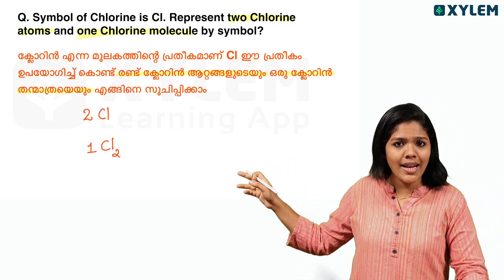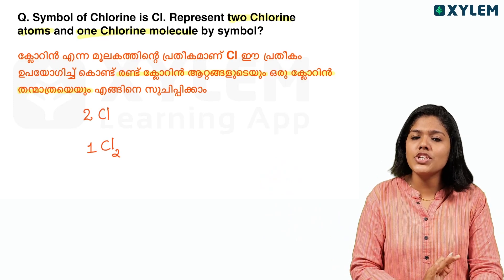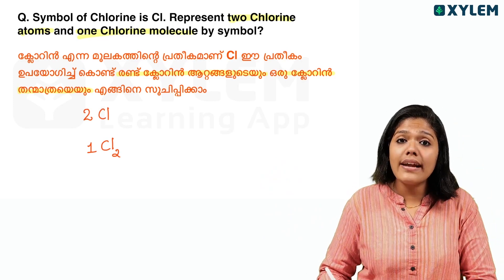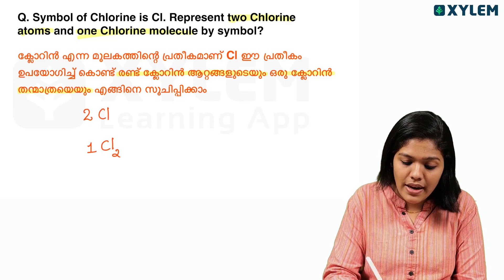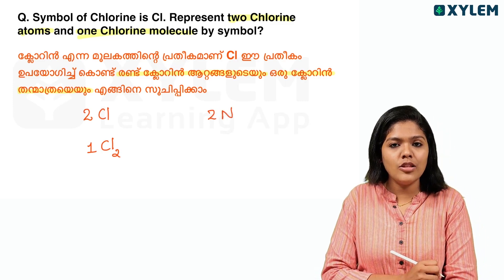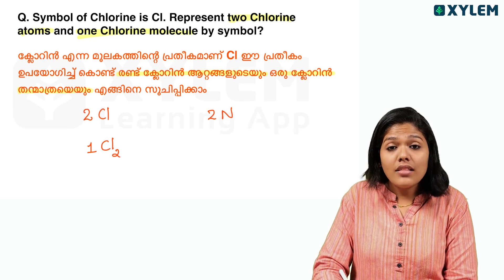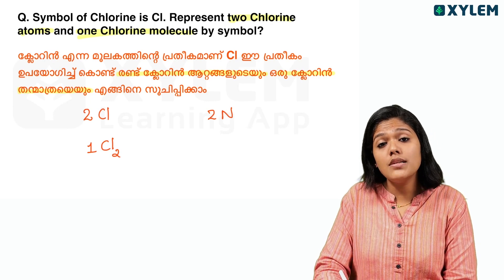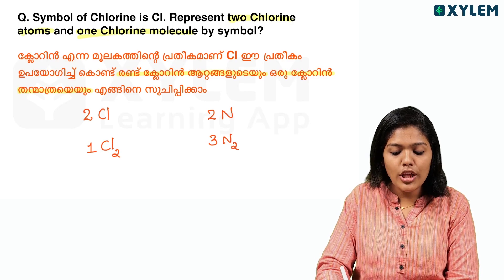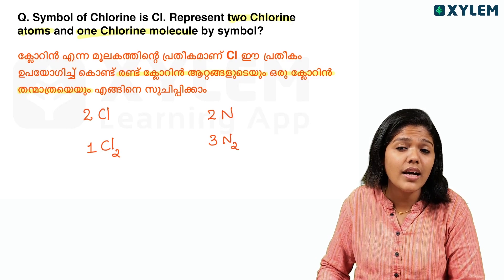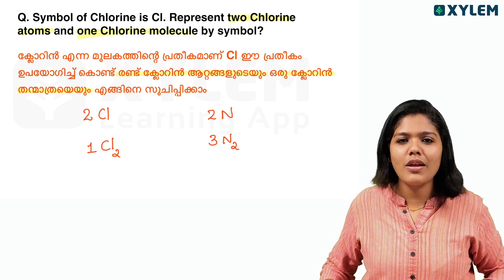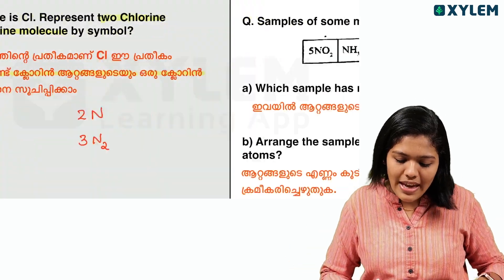The example is different if you have a different question. For instance: 2 nitrogen atoms is written as 2N. 3 nitrogen molecules — since nitrogen is a diatomic molecule — is written as 3 N2.